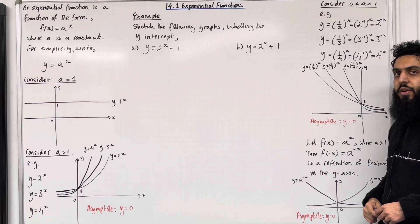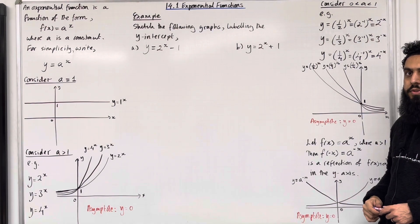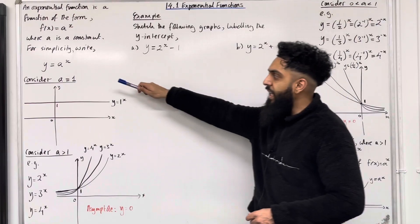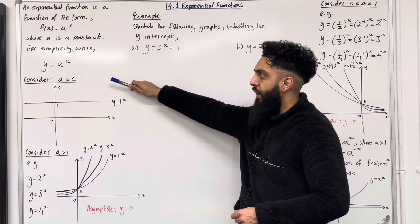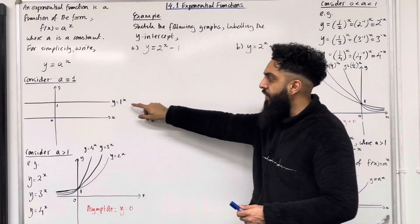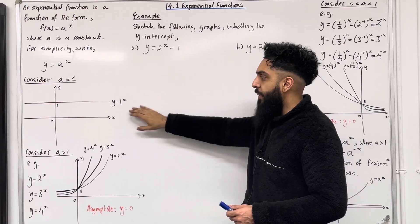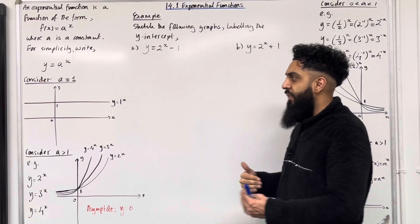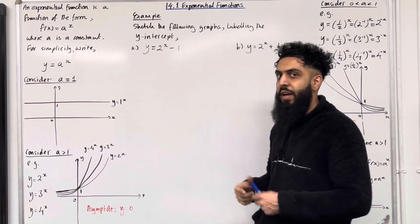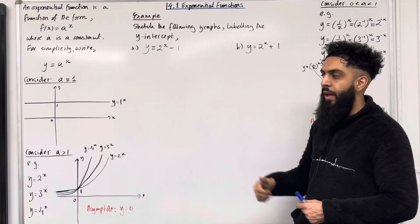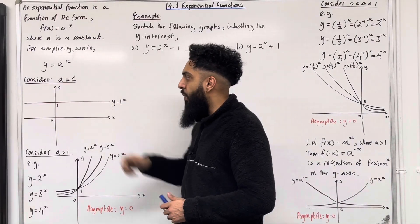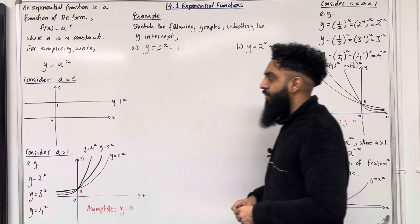I'm going to look at three examinable scenarios. Scenario number 1: consider a = 1. If a = 1, we've got y = 1^x. When I substitute any x values into this equation, I get a fixed y value, which is y = 1. Hence the graph is a flat horizontal line cutting the y-axis at 1.